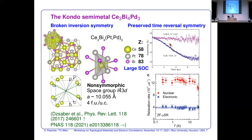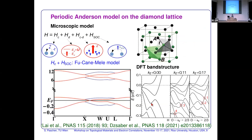Time reversal symmetry was confirmed by muon spin rotation at the Paul Scherrer Institute. The zero-field asymmetry measured at 10 K and at 0.26 K shows no difference whatsoever — the curves totally collapse — and the relaxation rate shows nothing as a function of temperature. There is absolutely nothing that could trivially explain the spontaneous Hall effect through spurious magnetism.